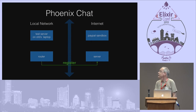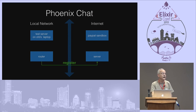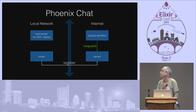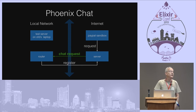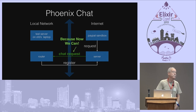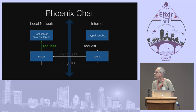We're going to do the same thing. The router goes to the server and registers, which opens and holds a connection — those of you experienced with Elixir know exactly why. The PayPal sandbox sends the request, and now the server sends the request information via chat. Why? Because it can. No delays, and of course the router then forwards it on to the laptop.